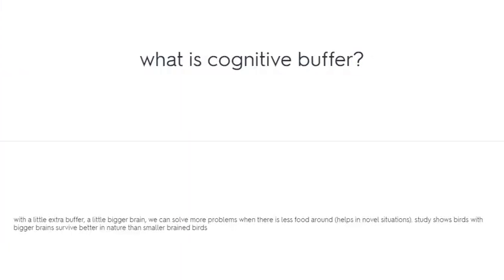What is cognitive buffering? With a little extra buffer — a slightly bigger brain — we can solve more problems when there is less food around. Studies show birds with bigger brains survive better in nature than smaller-brained birds.